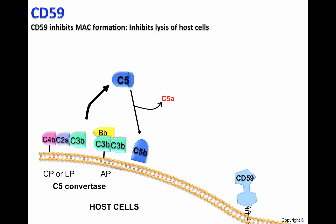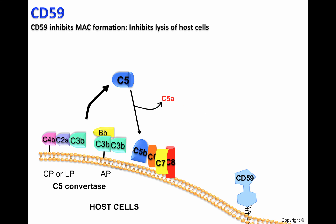C5b may be recognized by C6 and C7. This complex — C5b, C6, C7 — will attach to the cell surface of host cells, allowing the insertion of C8 into the cell membrane of host cells.